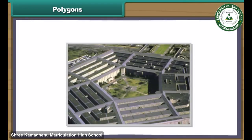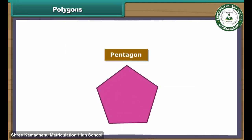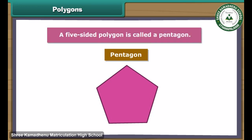Look at this image of the US Army Headquarters. It is known as the Pentagon as it has five sides. A five-sided polygon is called a pentagon.